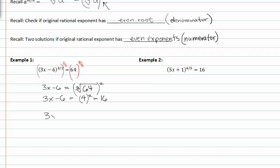Now we can solve for x. Adding 6 to both sides, we get 3x = 22. Dividing both sides by 3, we get x = 22/3.